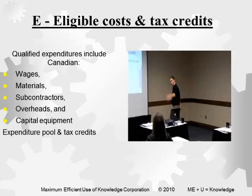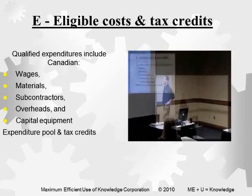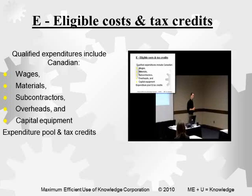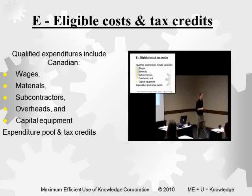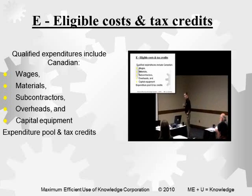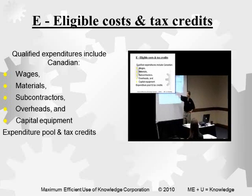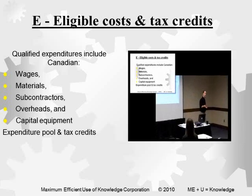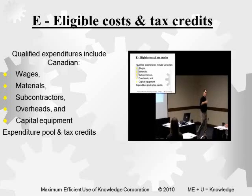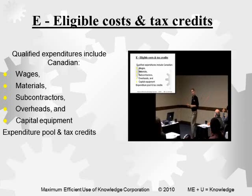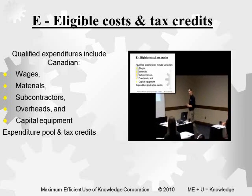There are a couple of main areas, and we're going to talk about each in a separate section. The first and most common on most claims is the wages of your direct employees — your own staff time on things — with some interesting rules on different types of employees. The next is materials: materials that are either consumed, rendered valueless in the research, destroyed, or transformed into prototypes that may be consumed or may change to commercial use.